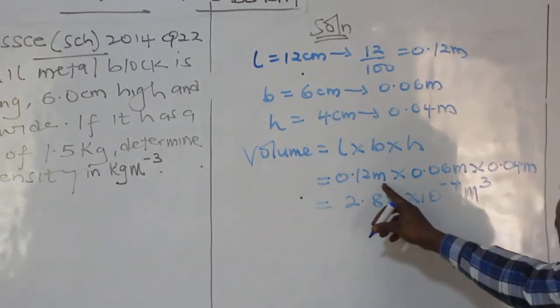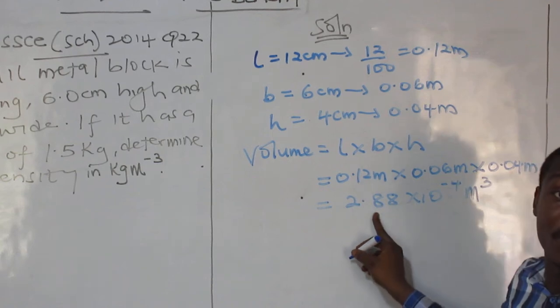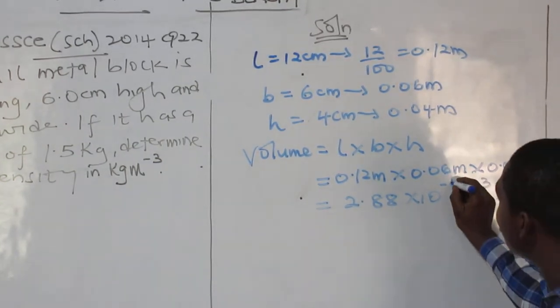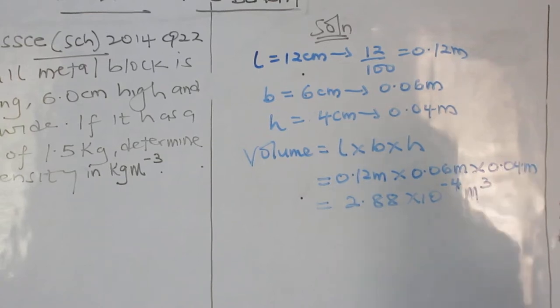Okay. Please check. 0.12, this will give you 2.88 times 10 to the power minus 4. So meter, meter, meter will give you meter cubed. So that is the volume.